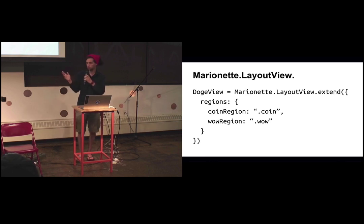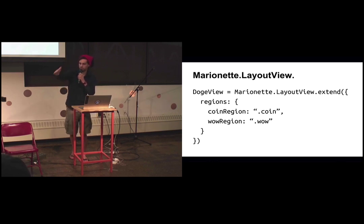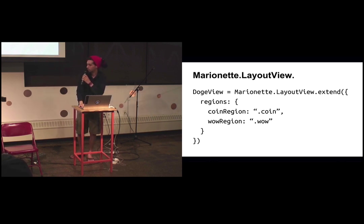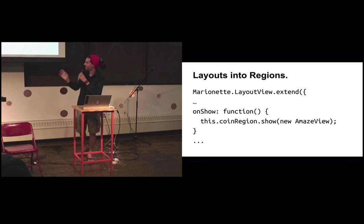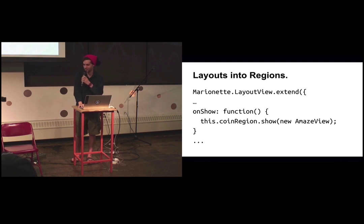Our layout view — or layout in pre-2 land — can contain regions. So now you see that layouts have regions, and regions you can show layouts in. The chain can go all the way down and back up. You're going to find two regions, selectors, and it's easy. We can show layouts into regions, so that relationship becomes cyclical — like inception. You can put your layouts into regions, and your layouts have regions.